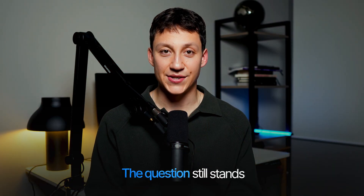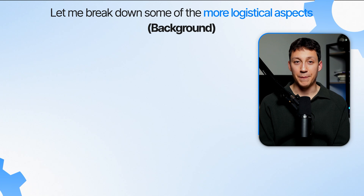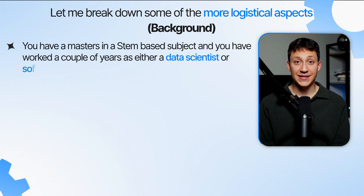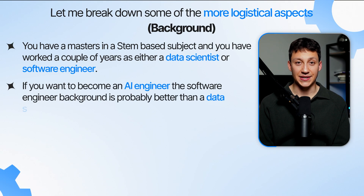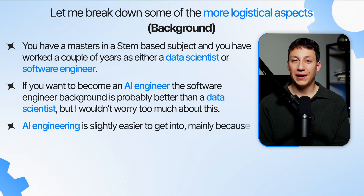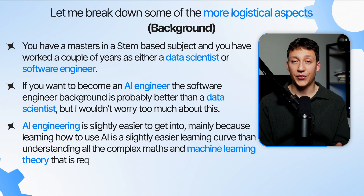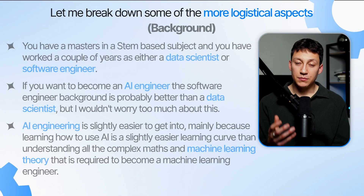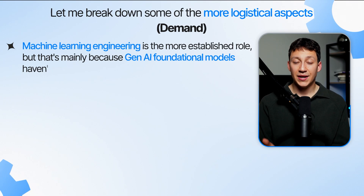So which one should you choose? The background for both roles is pretty similar — ideally a master's in a STEM subject and a couple of years as a data scientist or software engineer. For AI engineering, a software engineering background is probably slightly better. AI engineering is also slightly easier to get into, mainly because learning to use GenAI has a lower learning curve than understanding the complex maths and theory required for machine learning engineering. Machine learning engineering is the more established role, mainly because GenAI foundational models haven't been around that long.